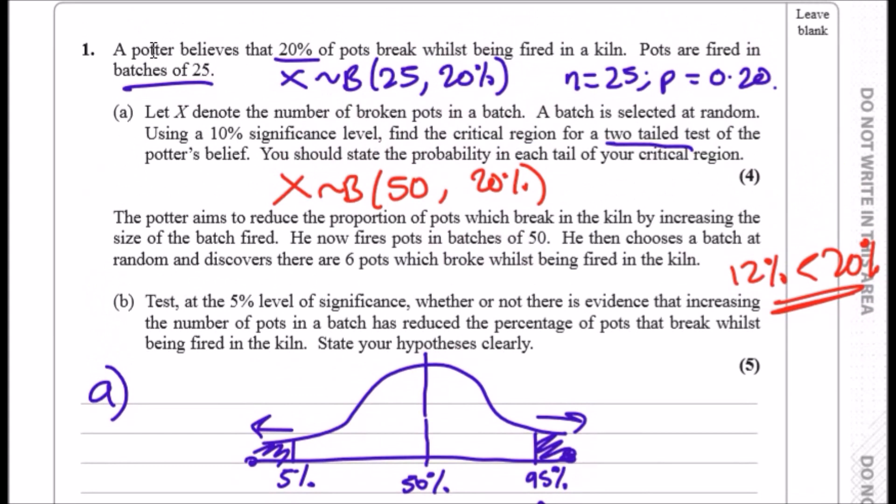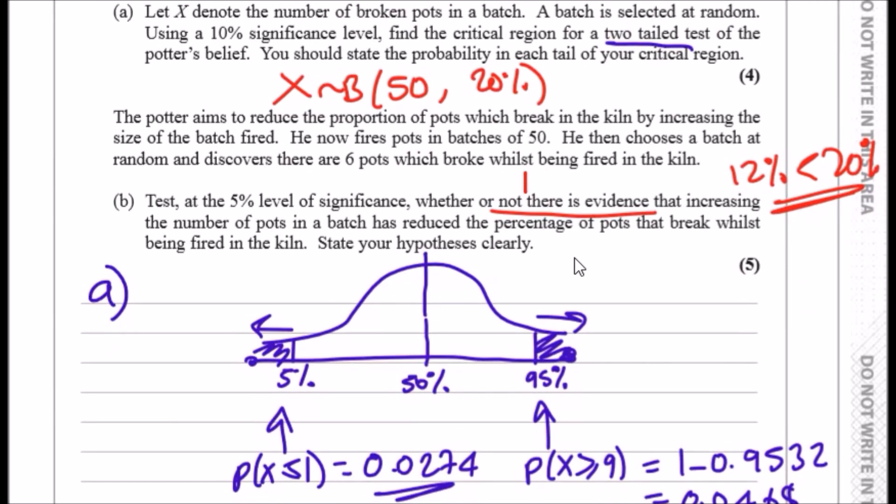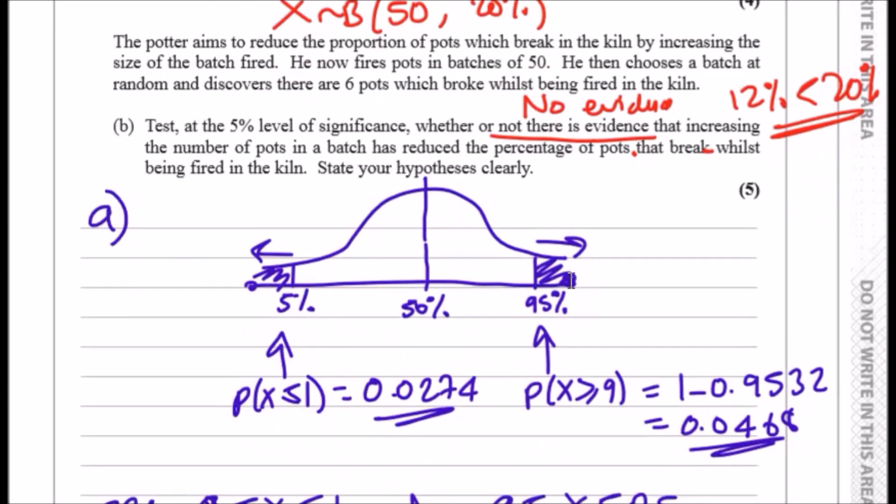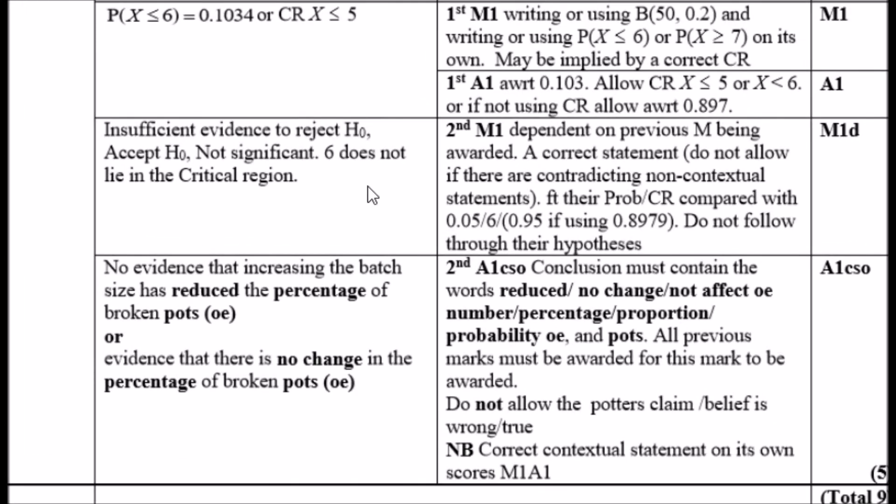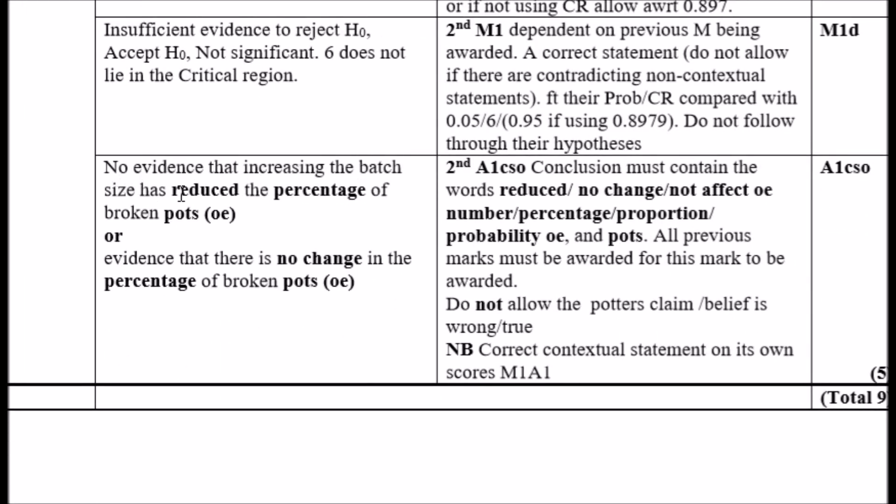Ultimately, there is no reason to assume the new belief. The question asks whether there is evidence that increasing the number of pots in the batch has reduced the percentage. We just say there is no evidence and copy that statement again. There is no evidence that increasing the number of pots has reduced the percentage of pots that break. Checking the mark scheme, they say no evidence that increasing the batch size has reduced the percentage of broken pots, or you could even say evidence that there is no change.